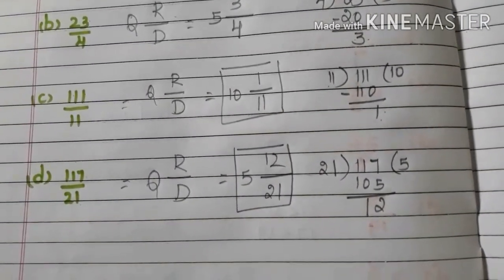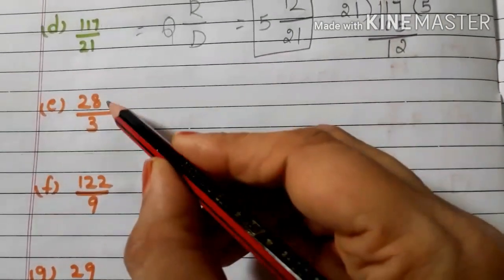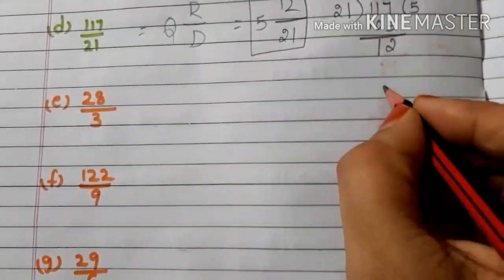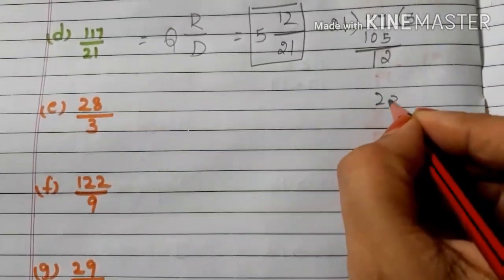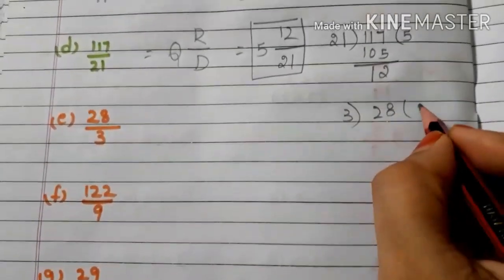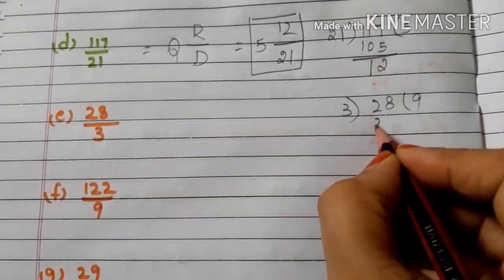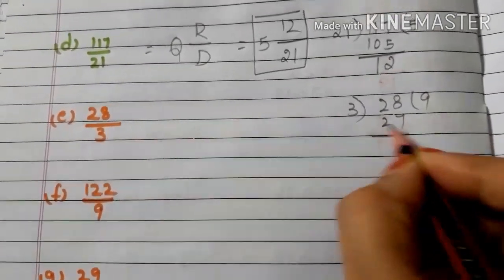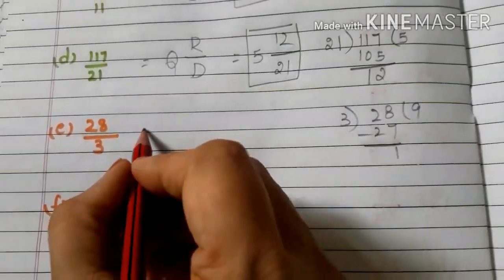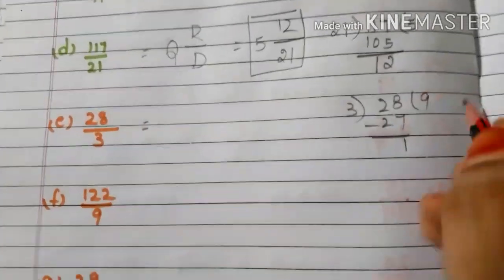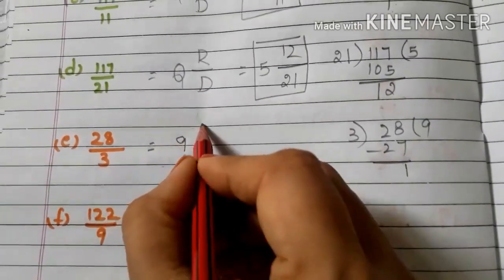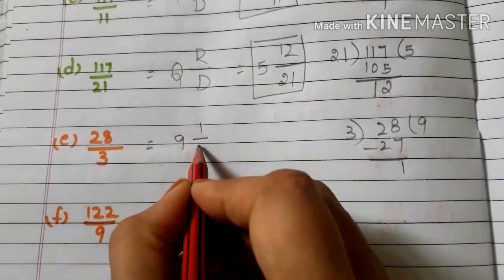E: 28/3. First divide 28 by 3. 3 nines are 27. 28 minus 27 is 1. So the mixed fraction is 9 and 1/3.